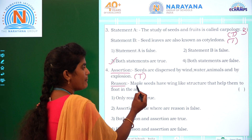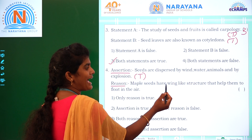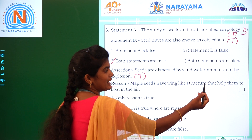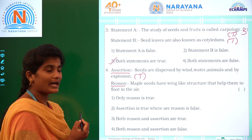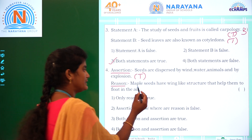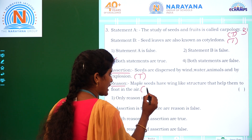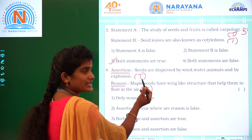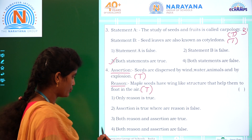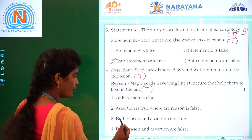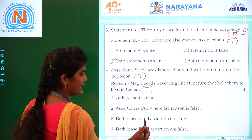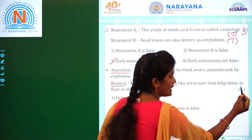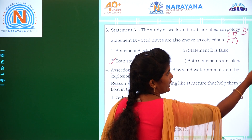Coming to the reason: apple seeds have a wing-like structure that helps them to float in the air. These statements are also absolutely true. So both reason and assertion are true, which is option 3.